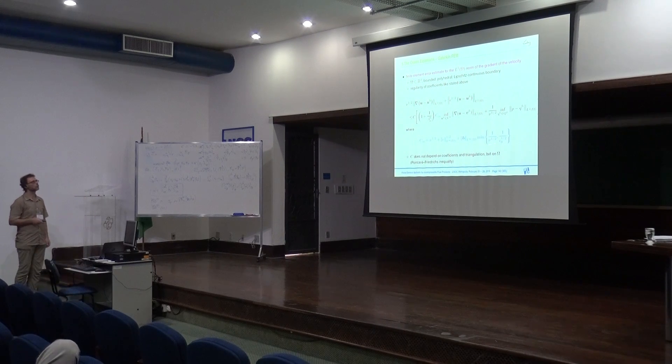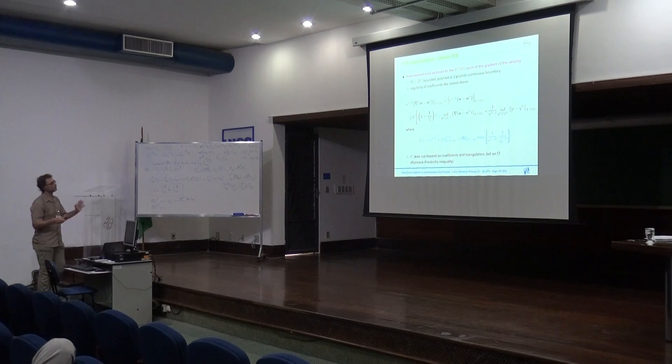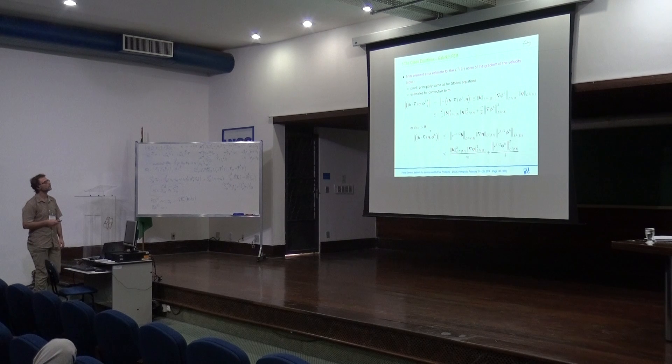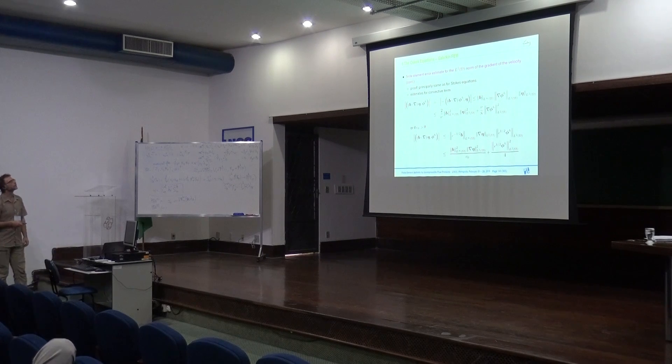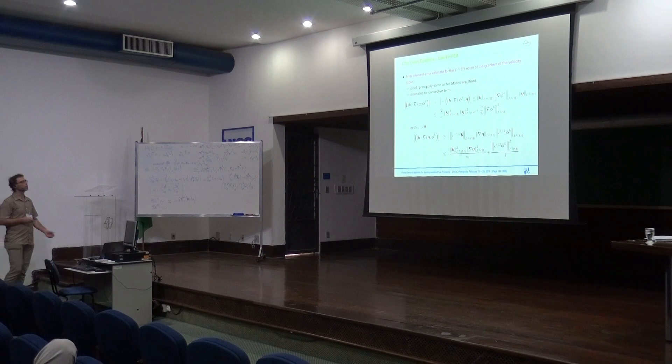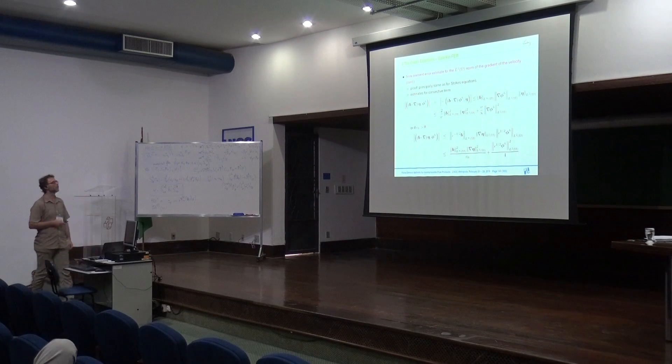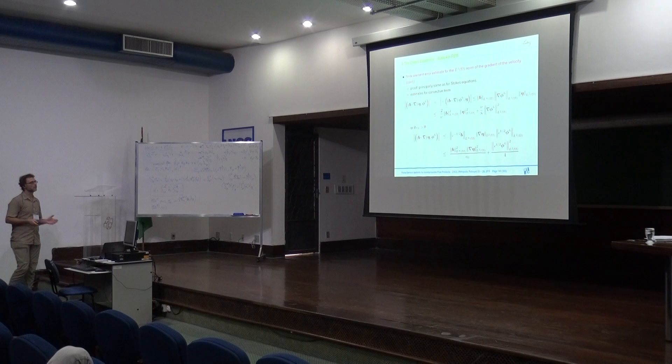And since divergence of V is 0 here, we can see that this term is minus the same term, so this term has to be 0. So V times divergence V, tested with V, the last two elements. So we have just skew-symmetric property. And the skew-symmetric property is then used in order to show existence and uniqueness of a weak solution.